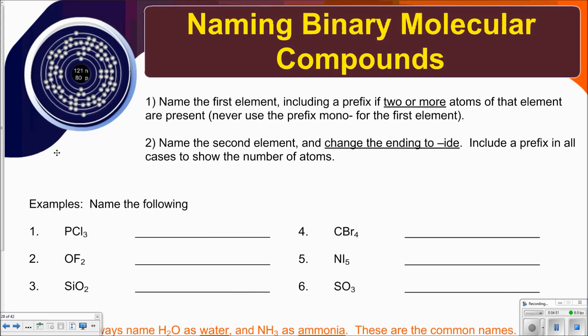Next, you're going to name the second element and change the ending to -ide. Include a prefix in all cases to show the number of atoms. So it's only the first element where you will not mention mono. In the second element, you have to.